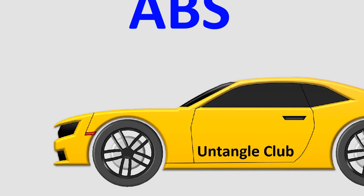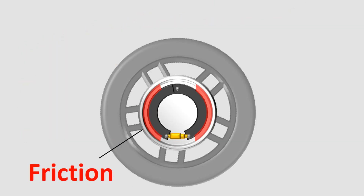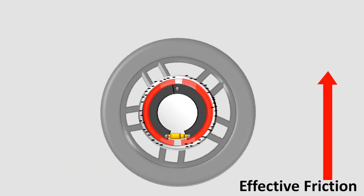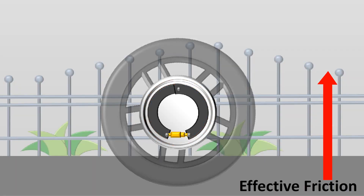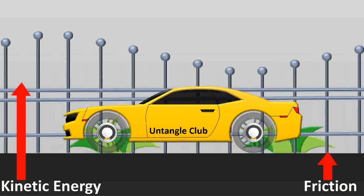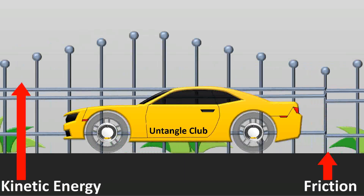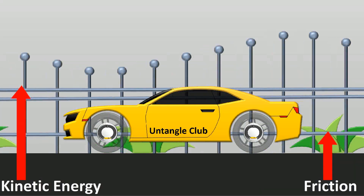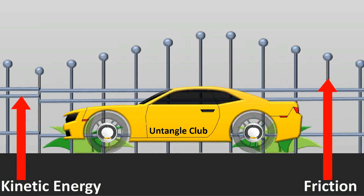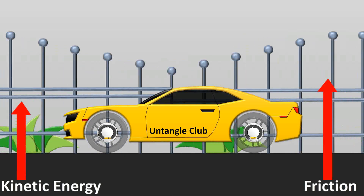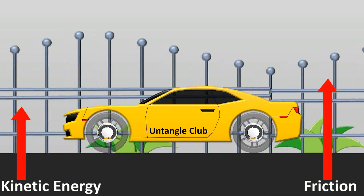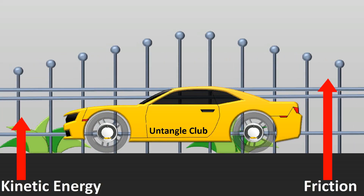Friction is caused due to rubbing of two surfaces. If the contact surface is greater and the surface finish is rough, you get more effective friction. In a vehicle not equipped with ABS, when the brake is applied initially, some pressure is applied causing friction between the two contact surfaces of the brakes. As they rub on each other, they cause friction, slowing the vehicle down.